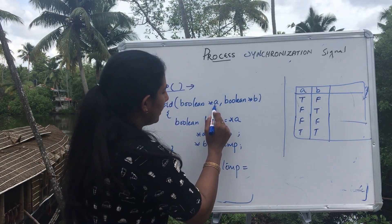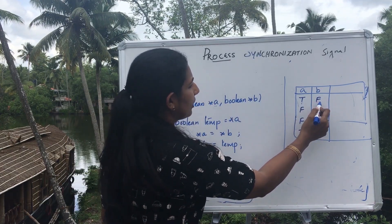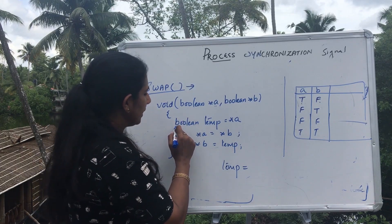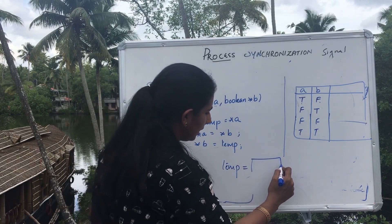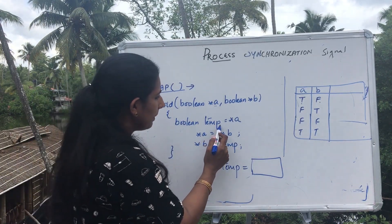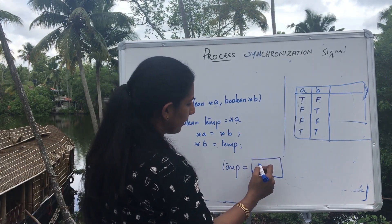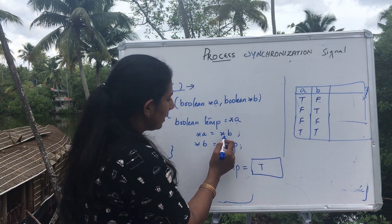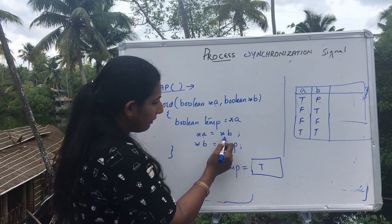Let us see: if the value of a is initially true and the value of b is initially false, what does this function do? The first line declares Boolean temp, which is a local variable. Temp initially holds the value of a. So the value of a is true, and a will then be assigned the value of b.